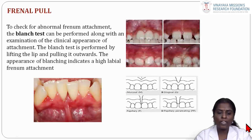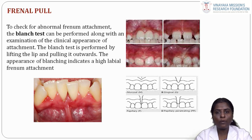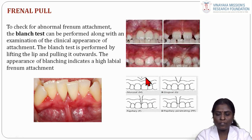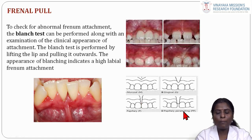To check for abnormal frenum attachment, a blanch test is performed by lifting the lip and pulling it outwards — the appearance of blanching indicates a high labial frenum attachment. There are four types of frenal attachment: mucosal (attached at the mucogingival junction), gingival (in the attached gingiva), papillary (in the interdental papilla), and papillary penetrating type.